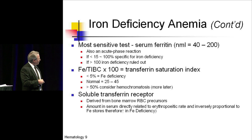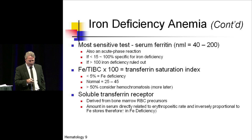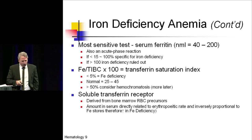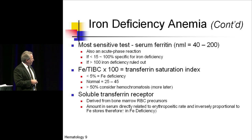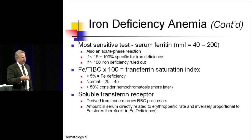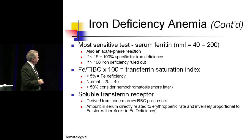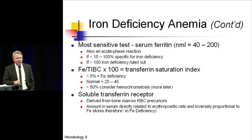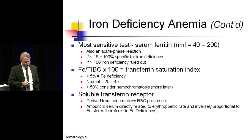If ferritin is less than 15, there's almost 100% specificity for iron deficiency. Greater than 100 essentially rules it out in a patient in their steady state without an inflammatory process. The transferrin saturation index — iron over TIBC times 100 — if less than 5%, is highly consistent with iron deficiency. Normal is 25% to 45%. An elevated iron saturation is consistent with hemochromatosis. If that's not helpful, the soluble transferrin receptor, which is inversely related to iron stores, would be elevated in iron deficiency.